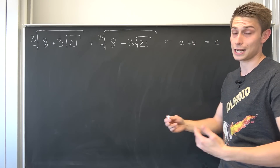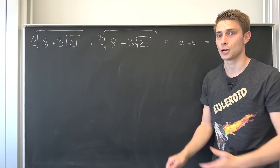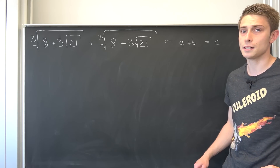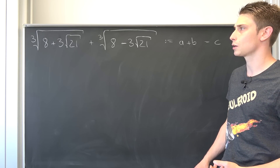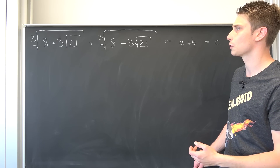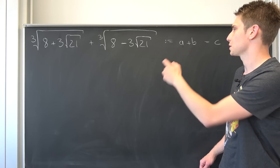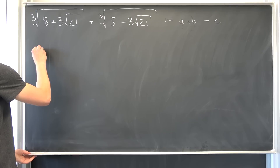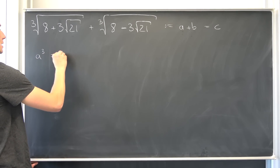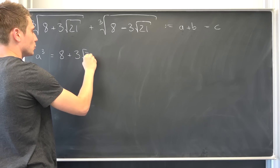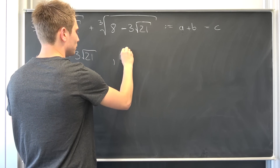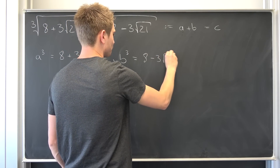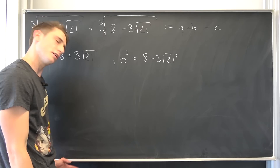The basic thing you want to do is to get rid of those cube roots. In the normal case you would either multiply by the conjugate for square roots, or take it to the third power and do some coefficient comparing. What we are going to do is take a look at a and b and cube them separately. So a to the third power is 8 plus 3 square root of 21, and b to the third power is the conjugate: 8 minus 3 square root of 21.